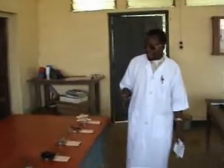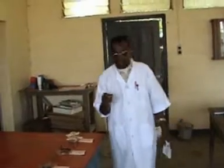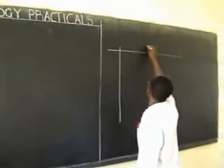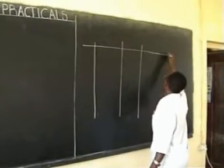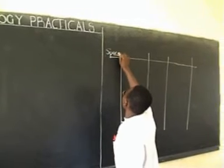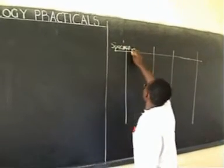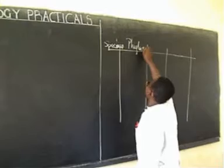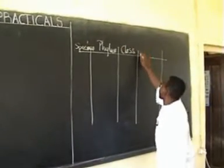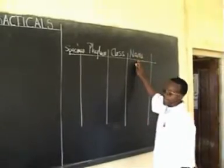Back at their seat, the candidate reads the question, which usually states that they should draw a table. The table has four columns: the first column is for the specimen, the second for the name, the third for the class, and the last column for an additional item that may be asked.